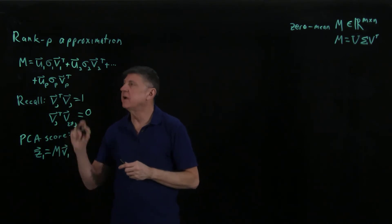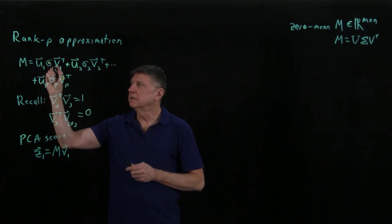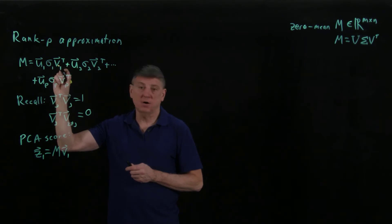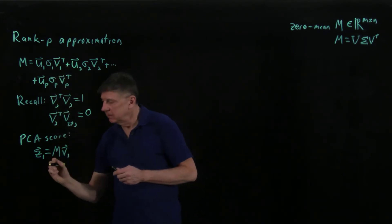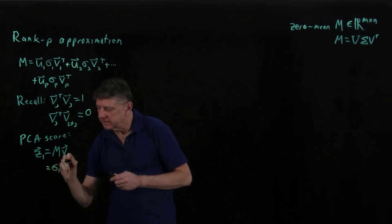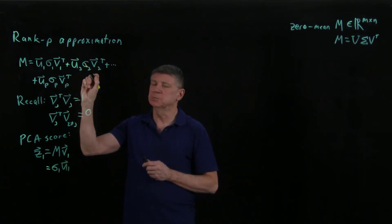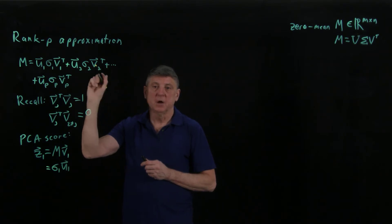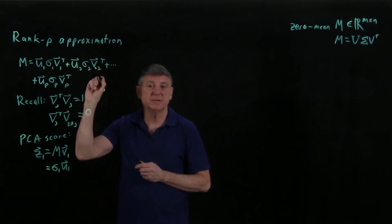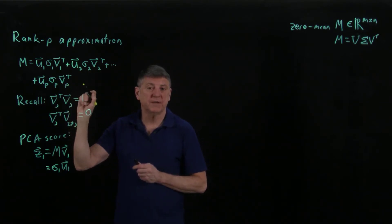Now, if we multiply M by V1, what will happen is when we multiply that into the first term, we'll get U1, sigma 1, and then V1 dot V1 is 1, so that has to equal sigma 1 times U1. And what happens when I multiply this term by V1 on the right side? Well, that would be V2 dot V1, which has to be zero, and that means that this term vanishes, and so all of the rest vanish.